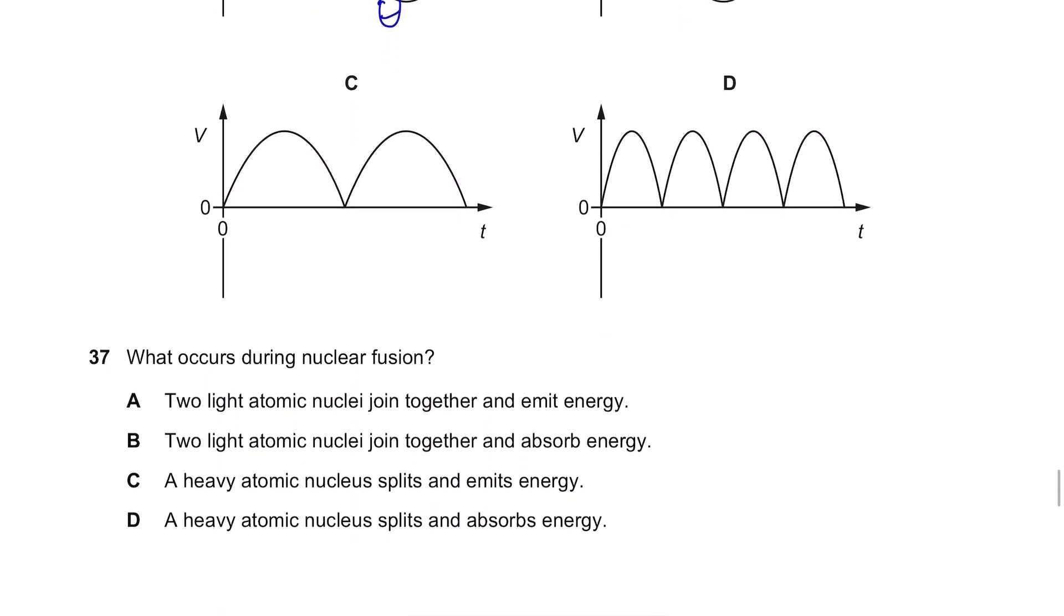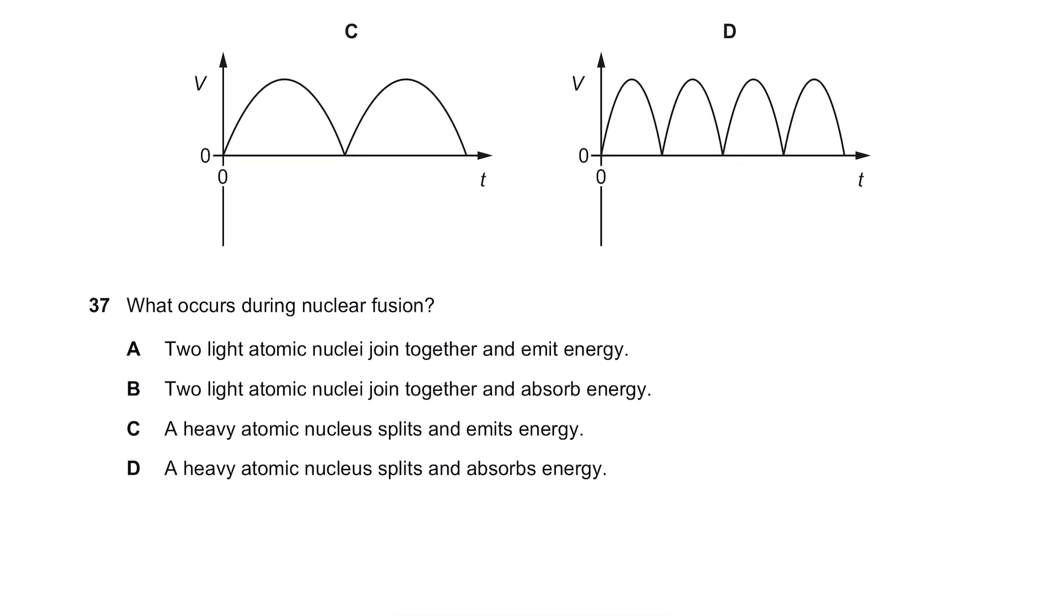Question 37. What occurs during nuclear fusion? Now, there is something called nuclear fission. Don't get confused. This is fusion. So, nuclear fusion is two light atomic nuclei joined together and emit energy or absorb energy. You can get confused. So, make sure you memorize the definition properly. It's A where they join together and emit energy. For nuclear fission, it's when they split up and absorb energy.